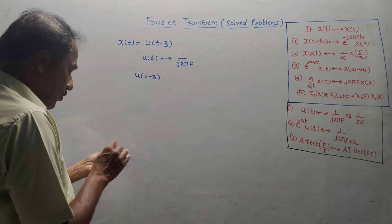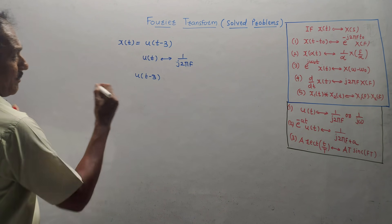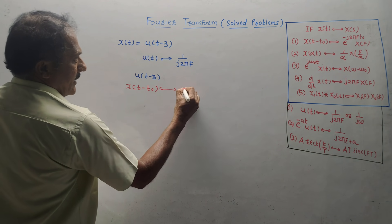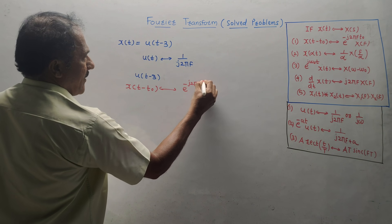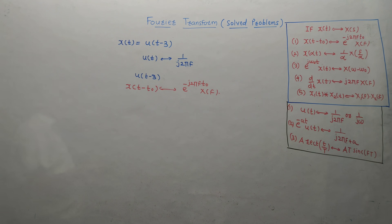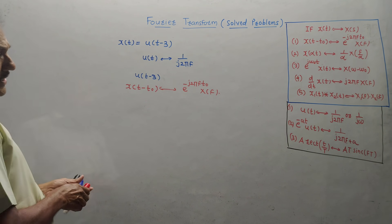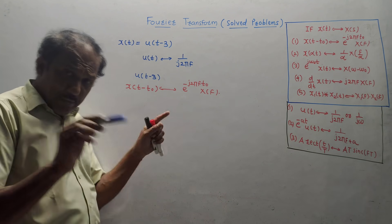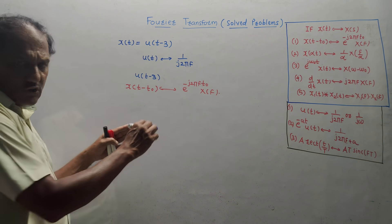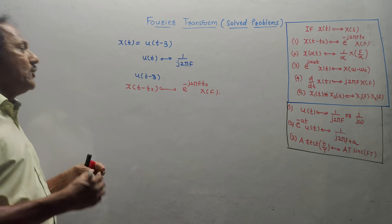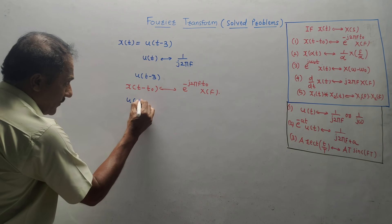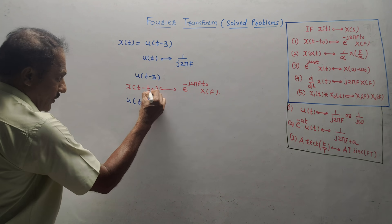In the exam, you need to write the statement of the time shifting property: X(T − T₀) has Fourier transform E^(−J2πF·T₀) · X(F). This is the time shifting property statement. Now, for U(T − 3), the value of T₀ is 3.